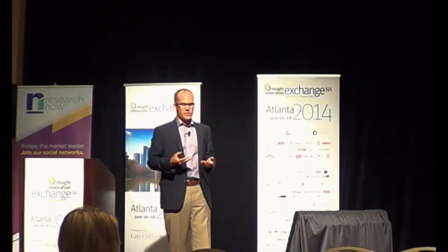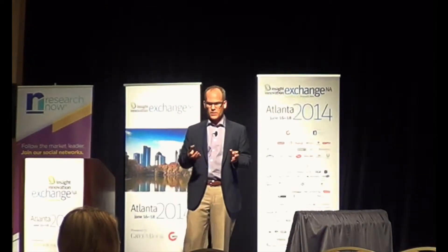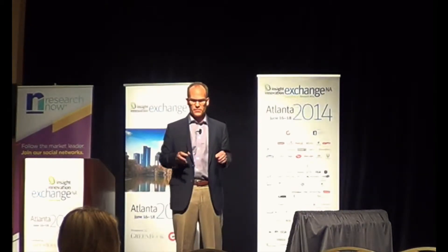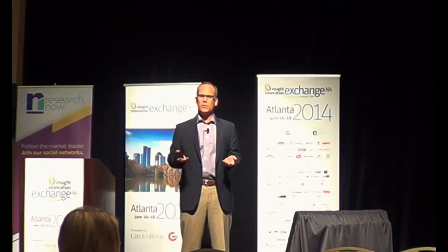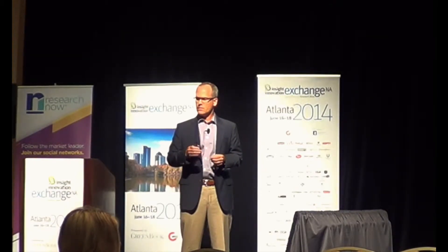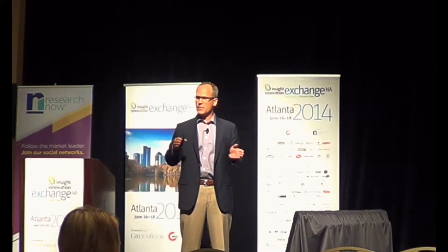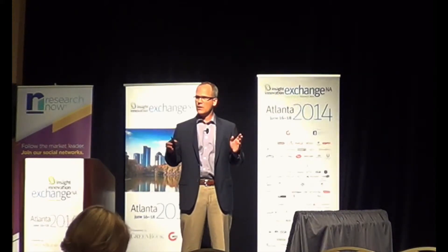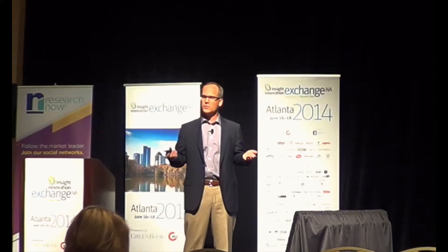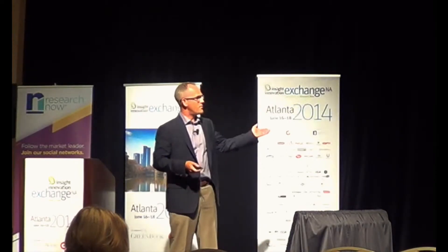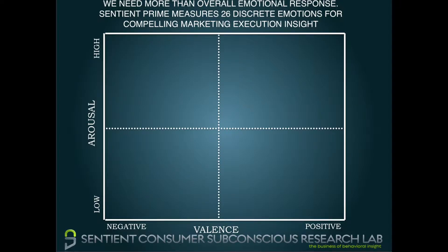When we think about discrete emotions, it's important to talk about what those different emotions can be. When you typically think of emotional response, a lot of people talk about valence — which is positive to negative or negative to positive — and arousal. You can characterize emotion along those two continuums: positive to the right, negative to the left, low arousal on the bottom, high arousal on the top.